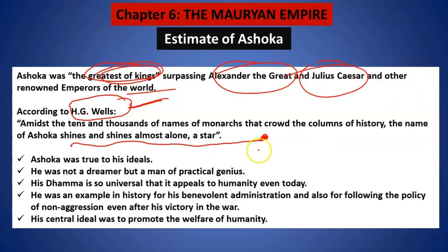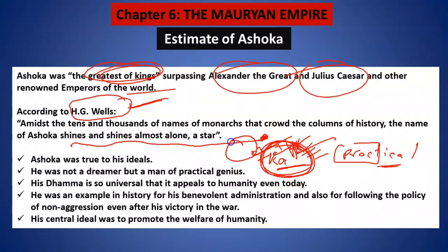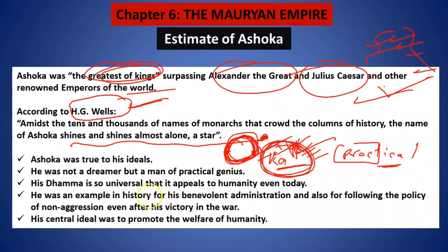Though he was a very great king, he was also a very practical person. After winning Kalinga, it did not happen that he returned Kalinga to the old people saying 'you can stay as per your own wish' — no, he kept it in his own kingdom. So he used to organize his political administration. Though he was generous, he was also very intelligent. Though he was following a non-aggression policy, he was not a dreamer — he was a practical genius person.